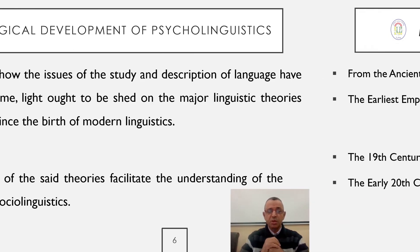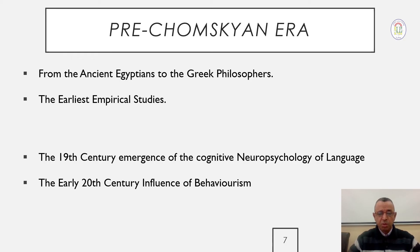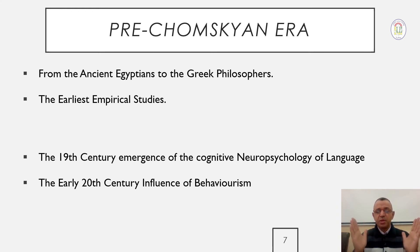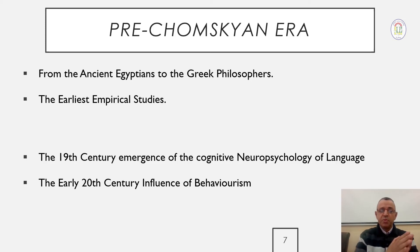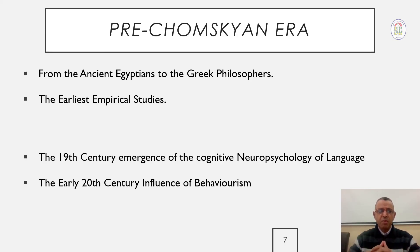If we want to categorize the emergence of psycholinguistics according to the available literature and many historians who discuss this topic, they usually talk about two periods: the period that preceded Chomsky's theory and the period that came after. By this we refer to the pre-Chomskyan era and the post-Chomskyan era.